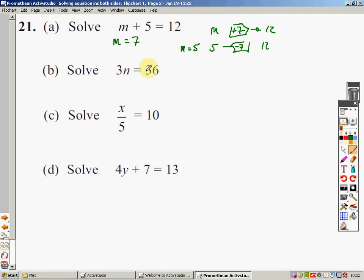This one, 3 times n is 36. If you're good at your times table, you know that 3 12s are 36. So n equals 12. You could have done n times by 3 gave you 36. So, 36 inverse, divide by 3, which gives you 12. So n equals 12 again.